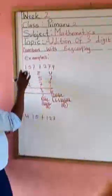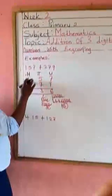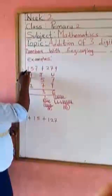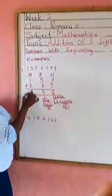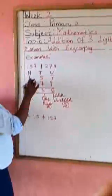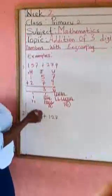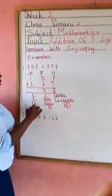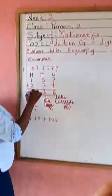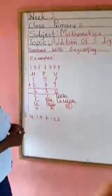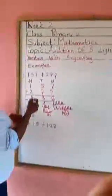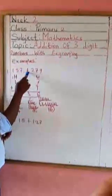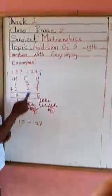So here we have 1 plus 1 plus 2. Count this one first: one. Count one: one. Count two: one, two. All together: one, two, three, four. So we have four. So our answer is 436. You can see 157 plus 279.